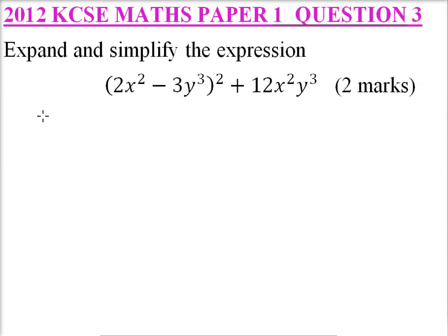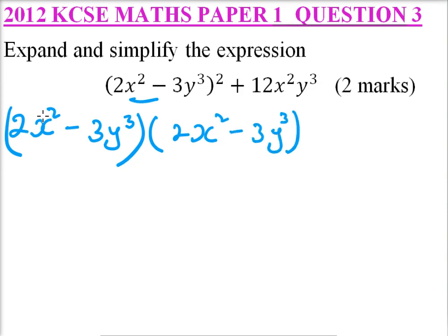So we need to expand this part. We write this is 2x squared minus 3y cubed, close the bracket, and then we say it is 2x squared minus 3y cubed. This is added to 12x squared y cubed.